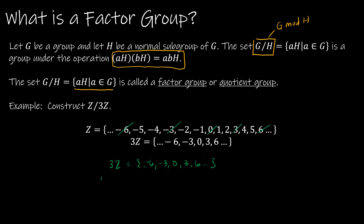Now I take 1 + 3Z. That adds 1 to each element of 3Z, giving ..., -5, -2, 1, 4, 7, ... and so forth. I also take 2 + 3Z, which adds 2 to 3Z, giving ..., -4, -1, 2, 5, ... and so forth.